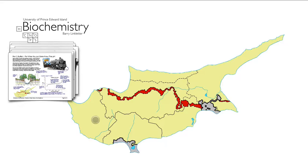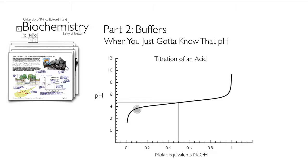Buffer zones appear all over the world — like the UN buffer zone in Cyprus between the Turkish Cypriot and Greek Cypriot sides. The UN troops in that buffer zone absorb conflict and prevent either side from reaching the other. In chemistry, buffers do the same thing: they prevent change. They prevent the pH from changing in the presence of added acid or base.